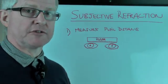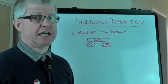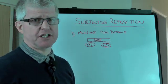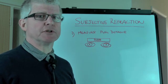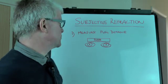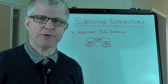What I'm going to do now is run through the steps for carrying out a subjective refraction. Now the first thing I would do, we have to put the trial frame on the patient. But before we do that, we need to measure the distance between their pupils.